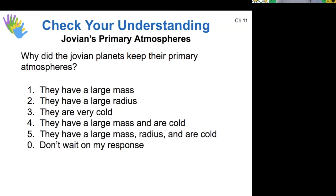Their large mass is definitely helpful. When we think about why any planet keeps an atmosphere, it's because it has a strong enough gravity so that the average molecular speed is not six times greater than the escape velocity of that planet. A lower escape velocity happens for a lower mass, and therefore a large mass with stronger gravity is more likely to keep its primary atmosphere. But mass is not the only important factor — temperature is also really important. The hotter a gas is, the faster its average speed will be and the more likely it is to escape.